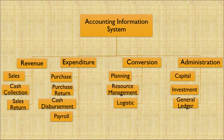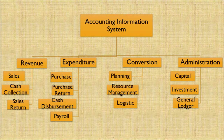Let's discuss accounting information systems. It includes revenue, expenditure, conversions, and administration. Revenue covers sales, cash collections, and sales returns. Expenditure covers purchases, purchase returns, cash disbursement, and payroll. Conversion includes planning, resource management, and logistics. Administration includes capital, investment, and general ledger. The accounting information system helps an organization manage the whole accounting process — through revenue, expenditure, administration, and planning of accounting entries.